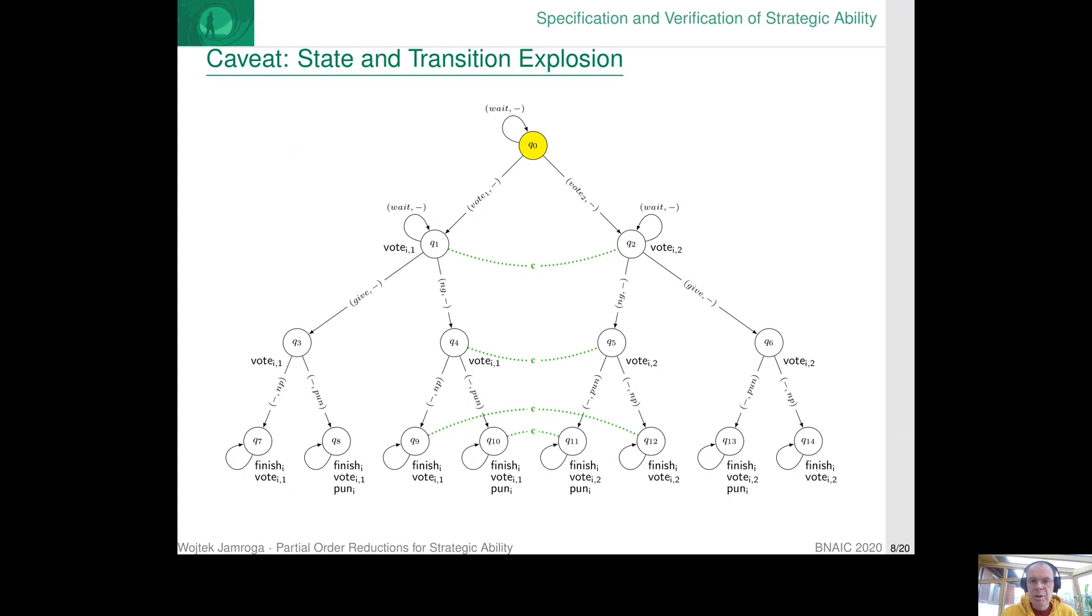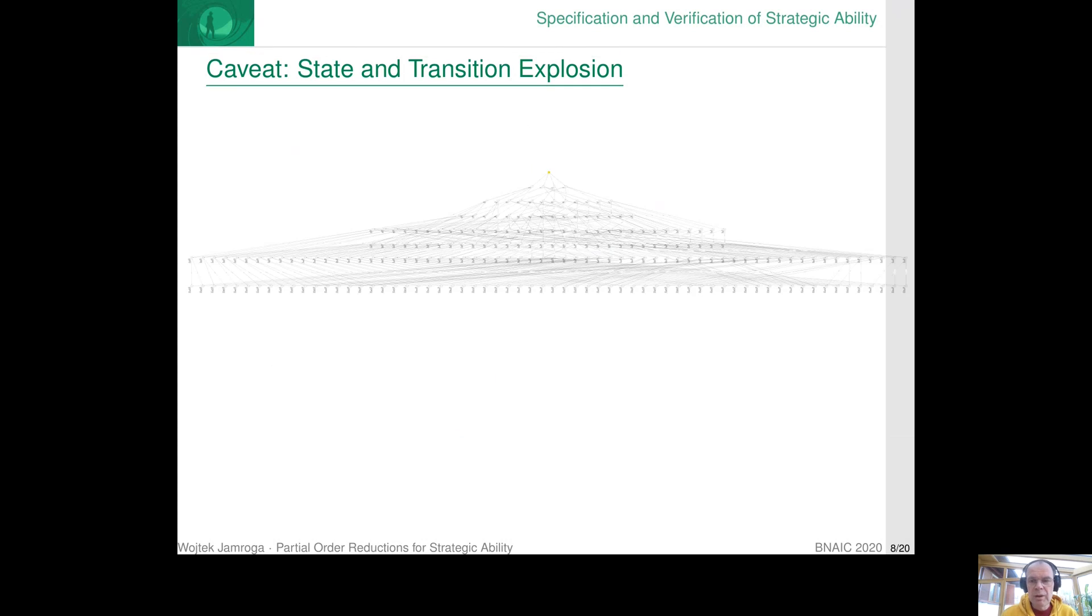So what I presented is the simple model of voting and coercion for a single voter and a single coercer. Now, if you add another voter, it already looks like this. So you can easily imagine that for a realistic scenario, say 10,000 voters or 100,000 voters, it becomes completely infeasible to even store the model in memory of the computer, let alone analyze it in any meaningful way.